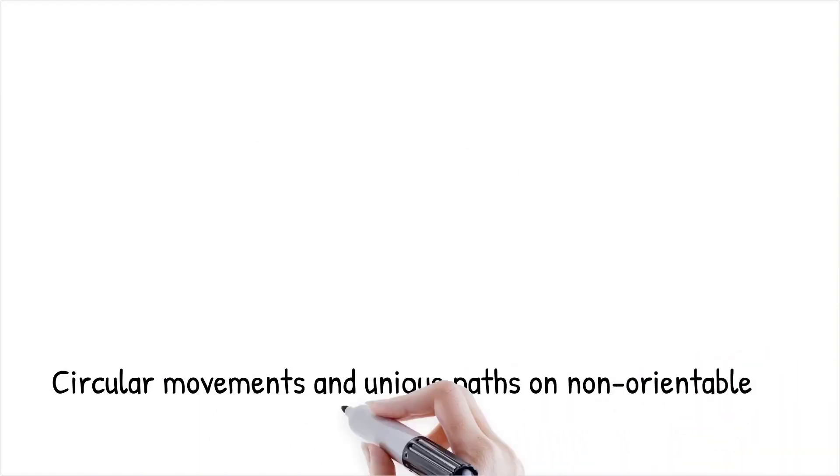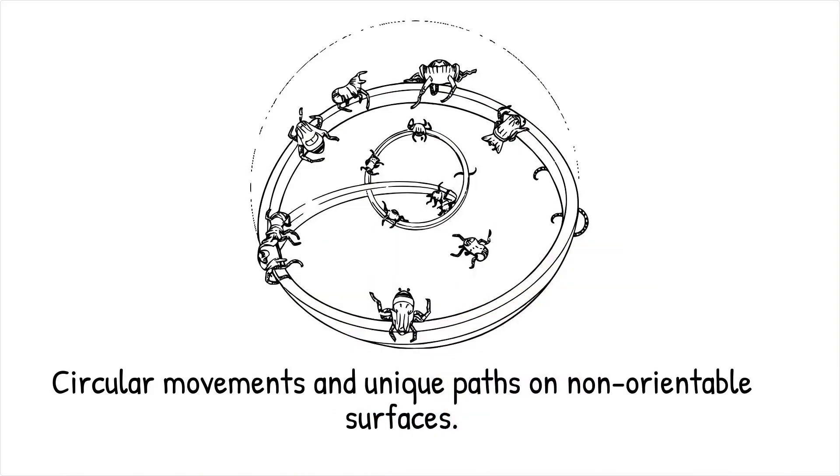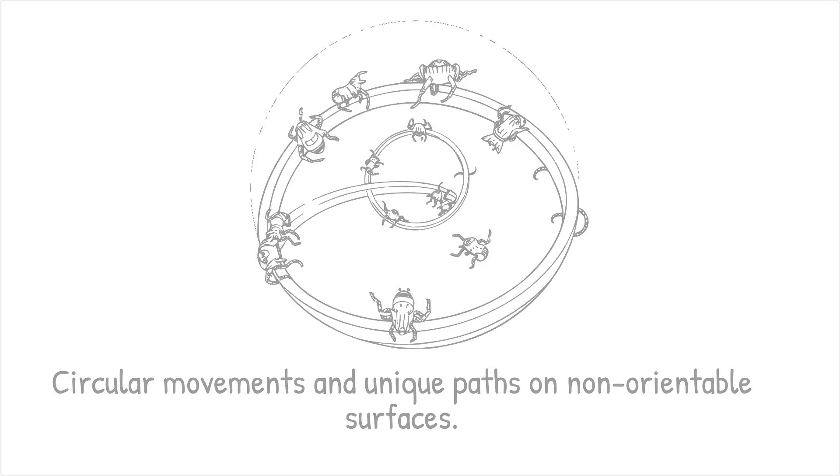In spherical environments, compact circular movements might dominate, allowing efficient exploration of finite spaces. Non-orientable surfaces, such as Möbius strips, could give rise to locomotion strategies that exploit the surface's unique connectivity. Organisms might use continuous looping paths to maximize energy efficiency, effectively treating the environment as infinite, despite its finite nature.